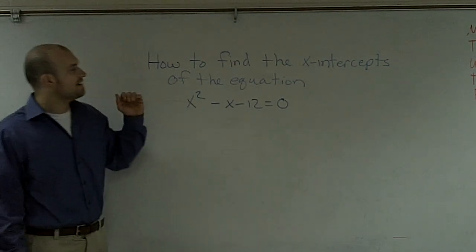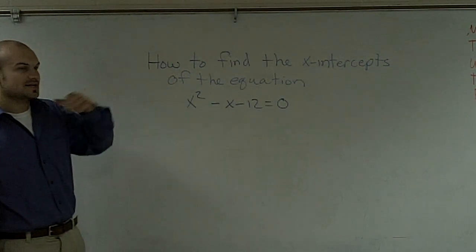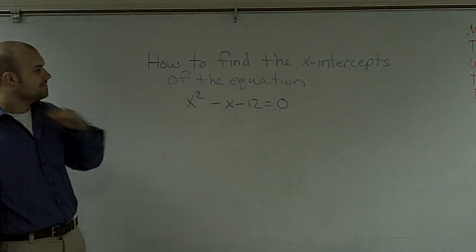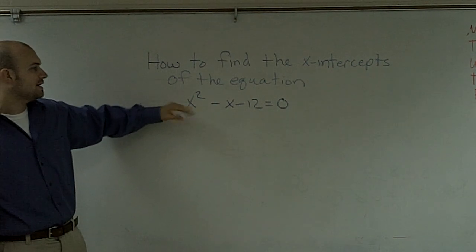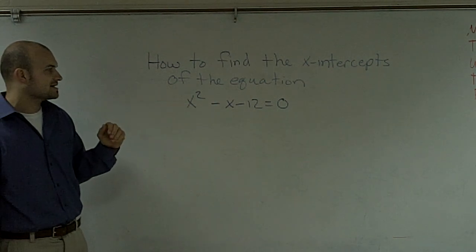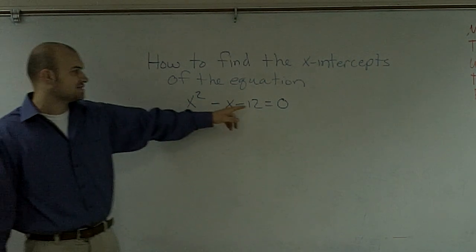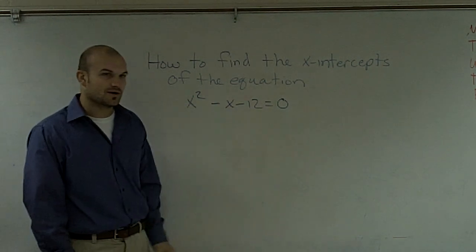What I'd like to do is show you guys how to find the x-intercepts of an equation. Given this polynomial: x squared minus x minus 12 equals 0.